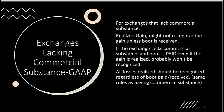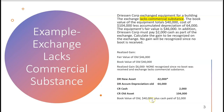Let's look at an example. DreesenCorp exchanges equipment for a building; the exchange lacks commercial substance. The book value of the equipment is $40,000 (cost of $104,000 less accumulated depreciation of $64,000), and the fair value is $46,000. DreesenCorp must also pay $2,000 cash as part of the exchange. The realized gain is calculated as the fair value of the old asset ($46,000) minus the book value of the old asset ($40,000), giving a realized gain of $6,000.